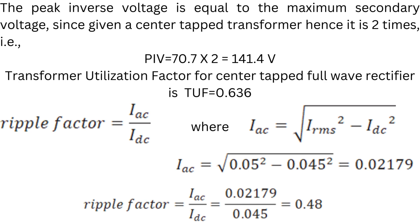The transformer utilization factor for a center-tapped full-wave rectifier is 0.636. For the ripple factor: Iac = √(Irms² − Idc²). Substituting the values of Irms and Idc, we obtain Iac = 0.02179. Ripple factor = Iac / Idc = 0.48.